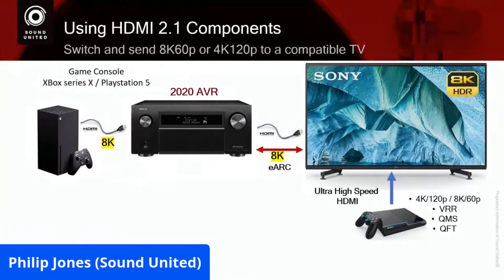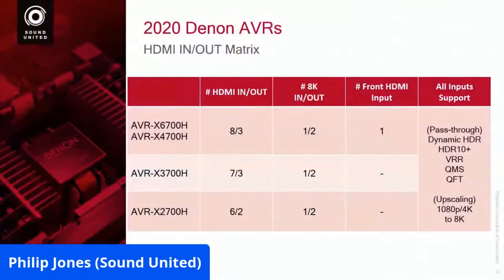This receiver will live in the system for a long, long time. The main thing to remember is all those other HDMI 2.1 features — whether you have an 8K TV or not — give you benefit: Dynamic HDR, HDR10+, Dolby Vision, Variable Refresh Rate, Quick Media Switching, all the stuff we've talked about before.